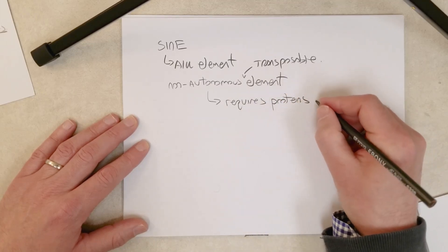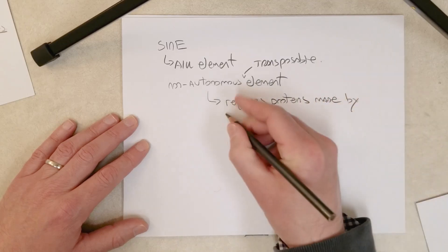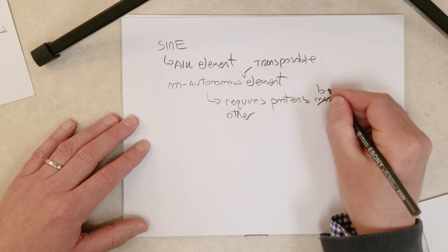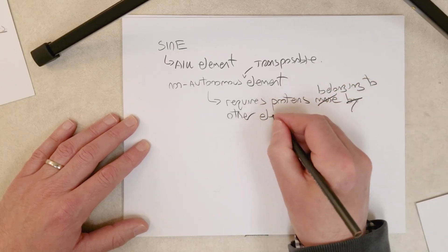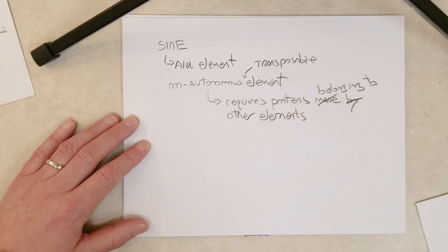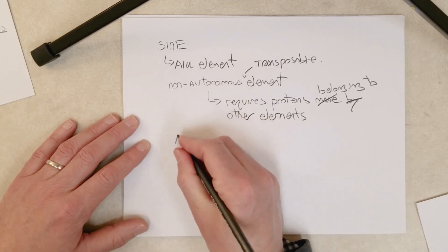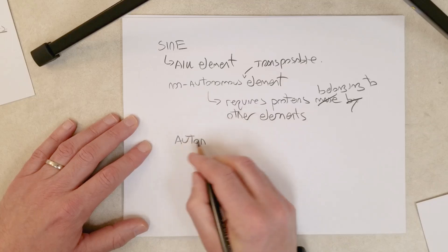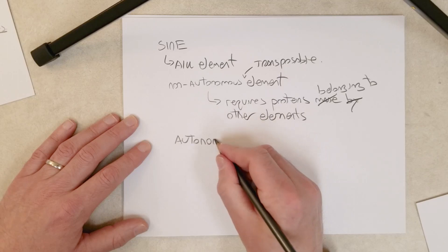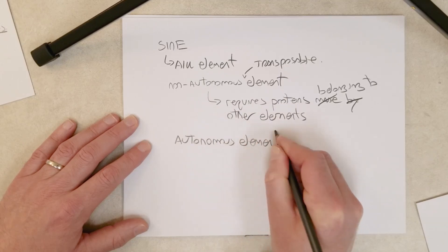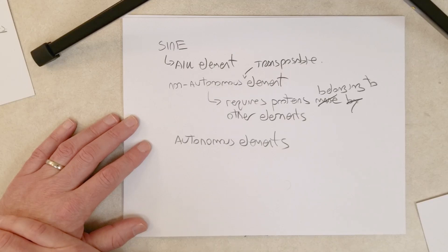It requires proteins belonging to other elements for their transposition mechanism, the mechanism they use to move to new locations, which requires proteins and enzymes made by other elements. In contrast to a non-autonomous element, we have autonomous elements. We have an example of an autonomous element already.